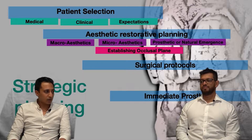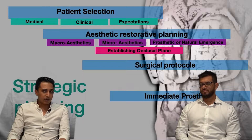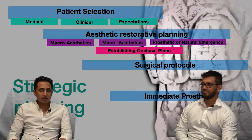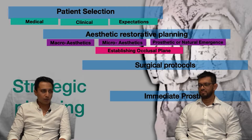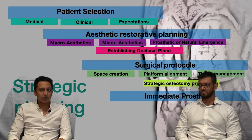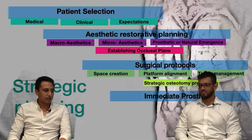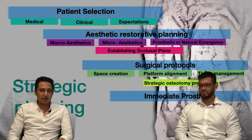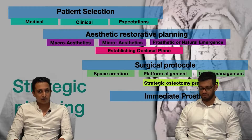Once we have established the restorative planning component, this is when we look at our cone beam CTs. This is essential for implant planning in this day and age, in order to establish the required volume of bone available within the specific sites selected for implant placement — selected by the restorative plan, not by our surgical plan.